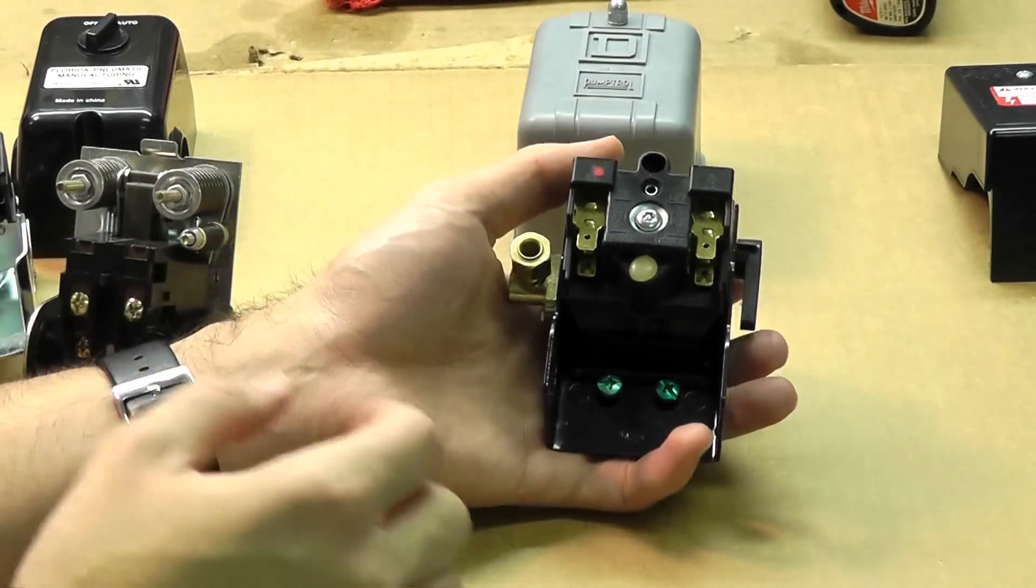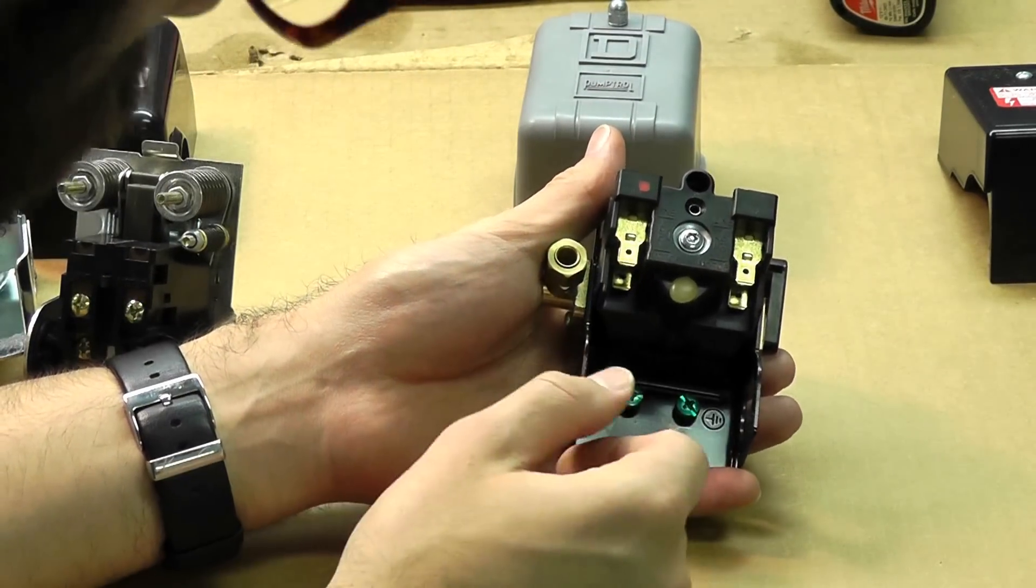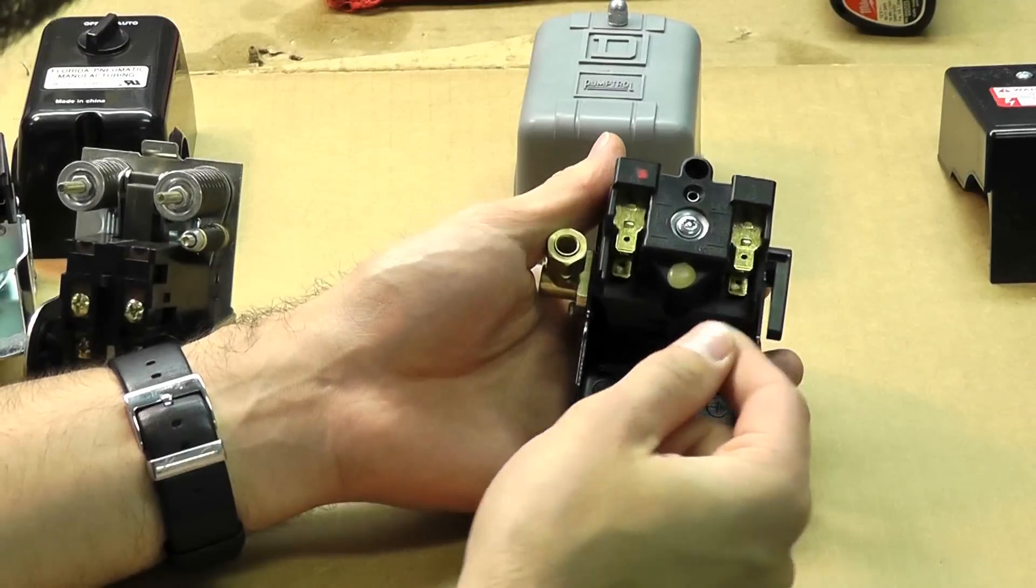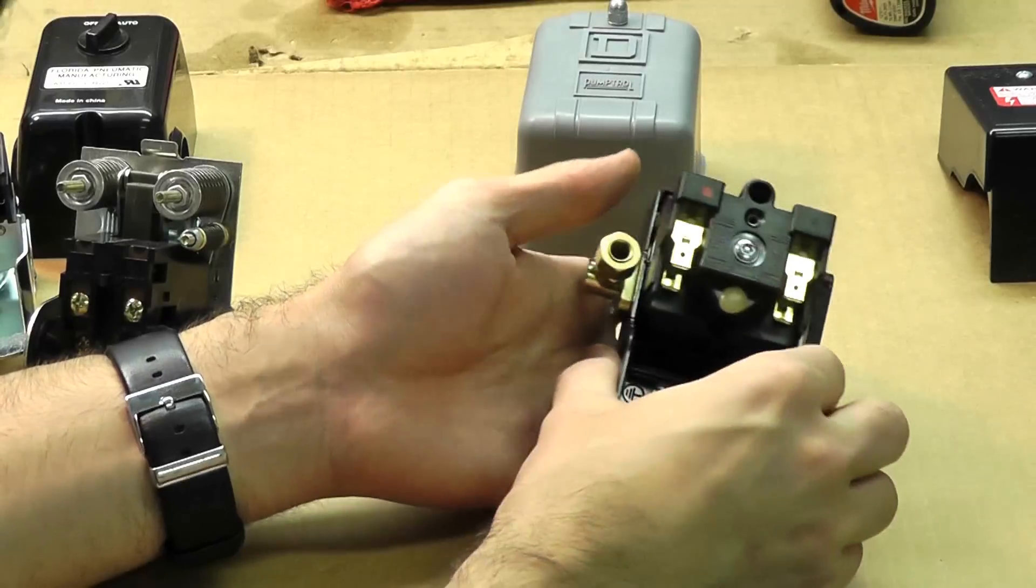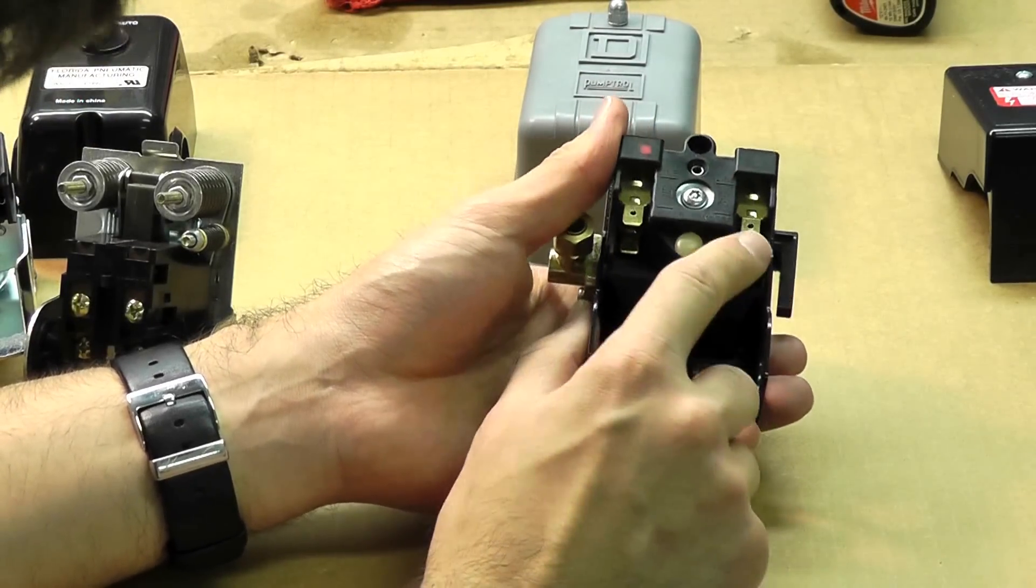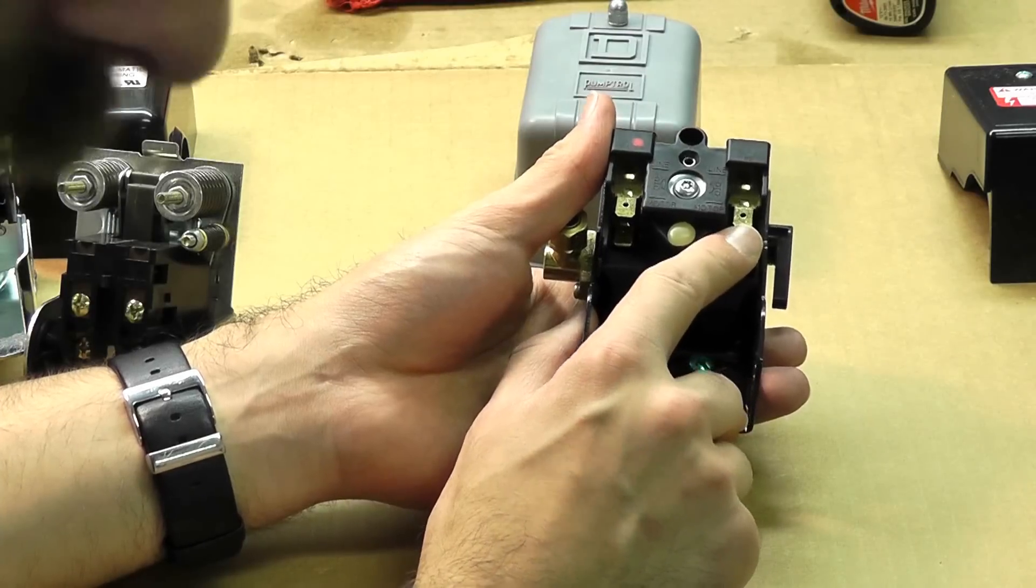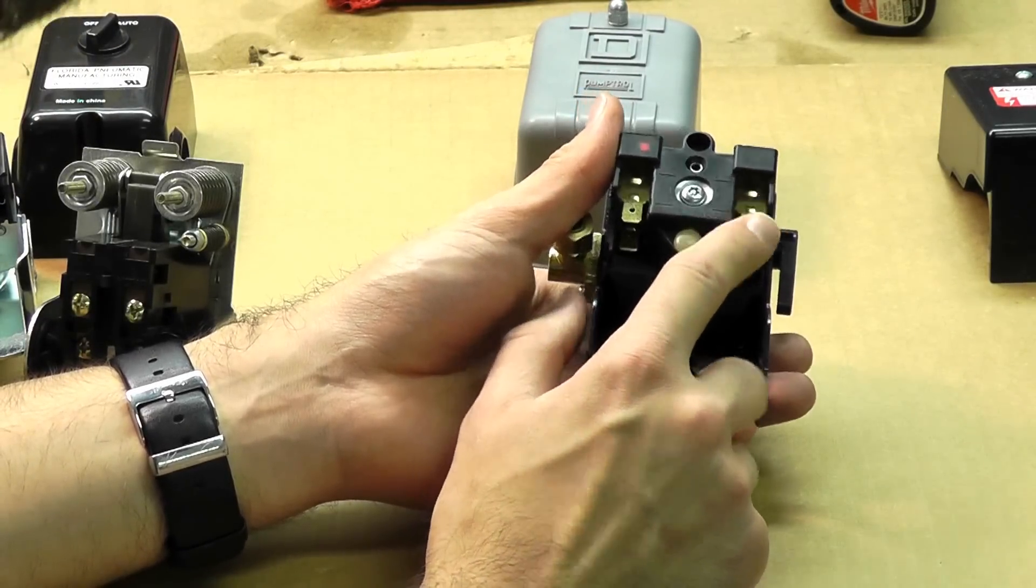You may notice that you have different types of terminals. This is a flag terminal, which is simply just a male kind of terminal here. It just slides on. The female from the wire slides onto this male terminal. If you have a different type of connection on your pressure switch, you can always just simply cut the wire on the power cord, install a new type of terminal that matches whatever you have on the switch.